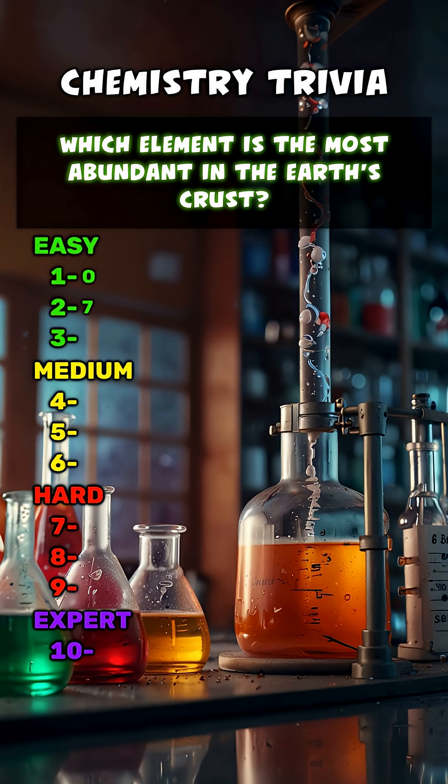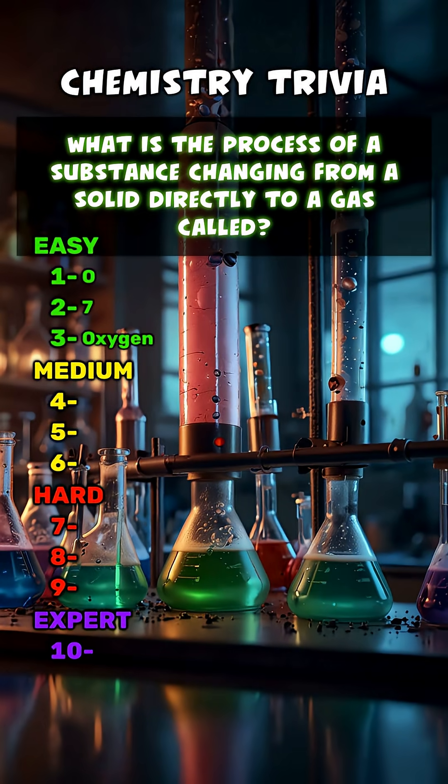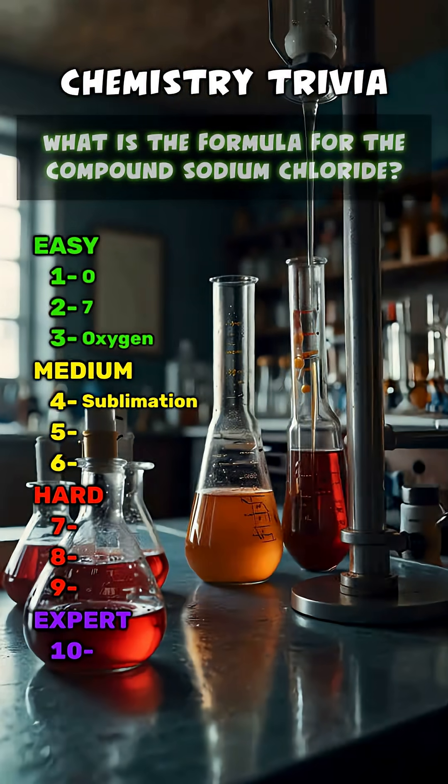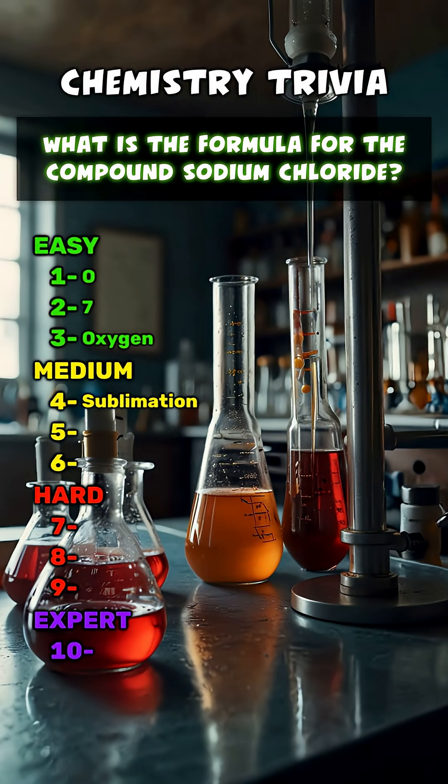Which element is the most abundant in the Earth's crust? Oxygen. What is the process of a substance changing from a solid directly to a gas called? Sublimation. What is the formula for the compound sodium chloride?